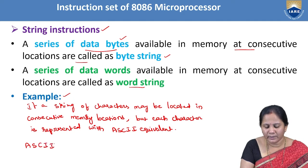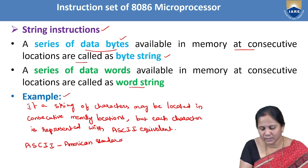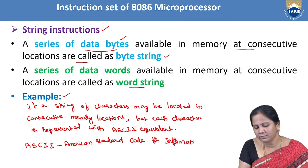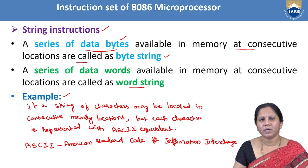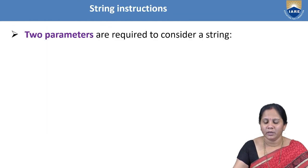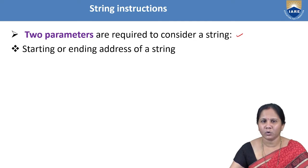ASCII stands for American Standard Code for Information Interchange. If you are considering characters in a string, they will be located in consecutive memory locations with the help of their ASCII equivalent. While considering a string, two parameters are very important: the starting or ending location of that string, and the length of the string.